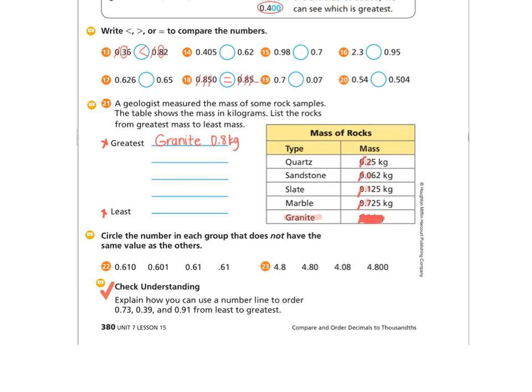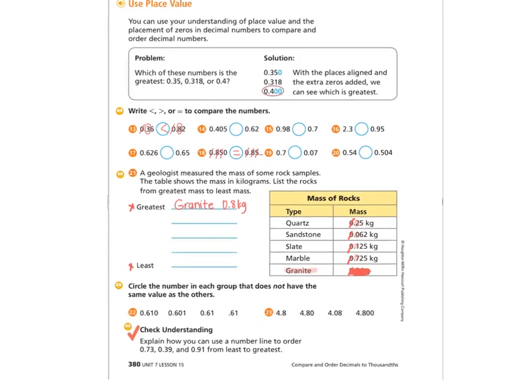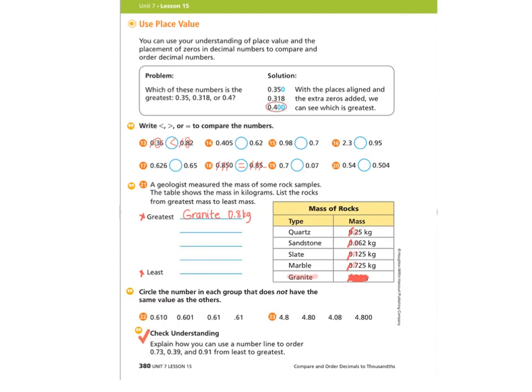When you've finished, do number twenty-two and twenty-three. It says circle the number in each group that does not have the same value as the others. That's a review of yesterday's lesson — make sure you are picking out the equivalent decimals and look carefully at those zeros; they're trying to trick you. Thanks for listening today. Your homework will consist of finishing your practice book pages and then completing your homework and turning it in as an assignment. Have a great day!